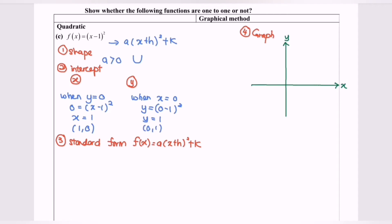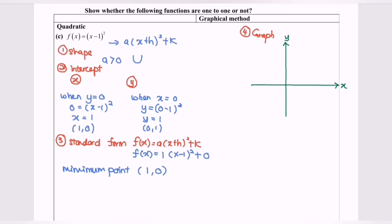Step number 3: using the standard form, f(x) = (x − 1)². Our minimum point will be (1, 0). By referring to the standard form, a = 1 and k = 0. Setting x − 1 = 0 gives x = 1, and k gives y = 0. So our minimum point is (1, 0).